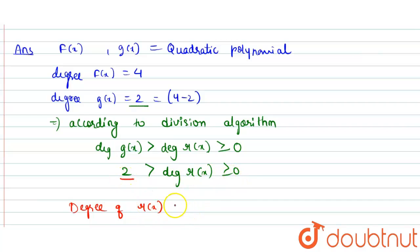So if it's less than 2 and greater than 0, so the value will be 1 or less than 1. Therefore, I can say that for the degree of remainder will have the value 1 or less than 1. Hence, we can easily use this important relationship that is given by the division algorithm to solve this question. I hope you understood the answer.